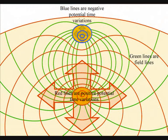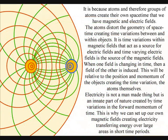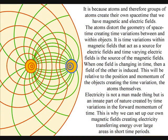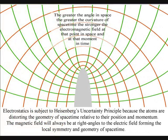It is because the atoms can distort the geometry of space-time that we have electromagnetic fields. It is time variations within magnetic fields that act as a source for electric fields, and time-varying electric fields induce magnetic fields. When one field is changing in time, then a field of the other is induced. This will be relative to the position and momentum of the objects creating the time variation, the atoms themselves.